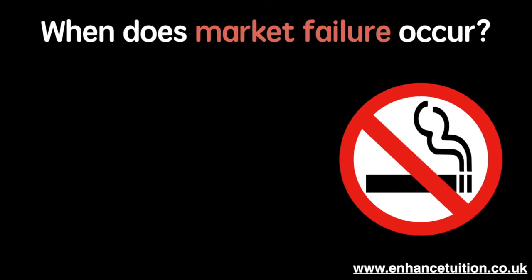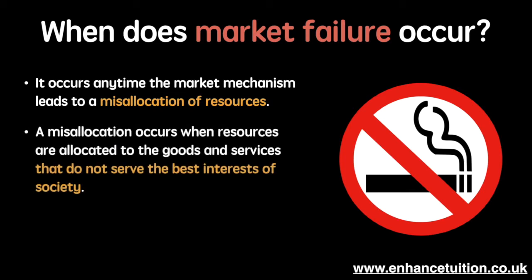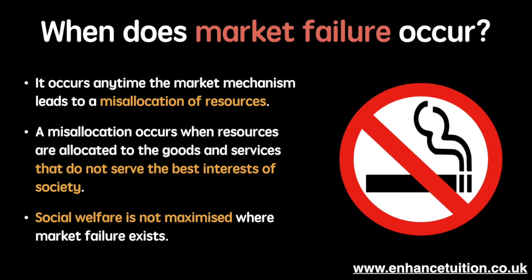When does market failure occur? It occurs anytime the market mechanism leads to a misallocation of resources. We previously considered efficiency and efficient resource allocations; now we need to consider why the market mechanism results in inefficient outcomes. A misallocation occurs when resources are allocated to goods and services that do not serve the best interests of society. Therefore, the market mechanism fails to achieve an outcome in which social welfare is maximized, and this creates market failure.